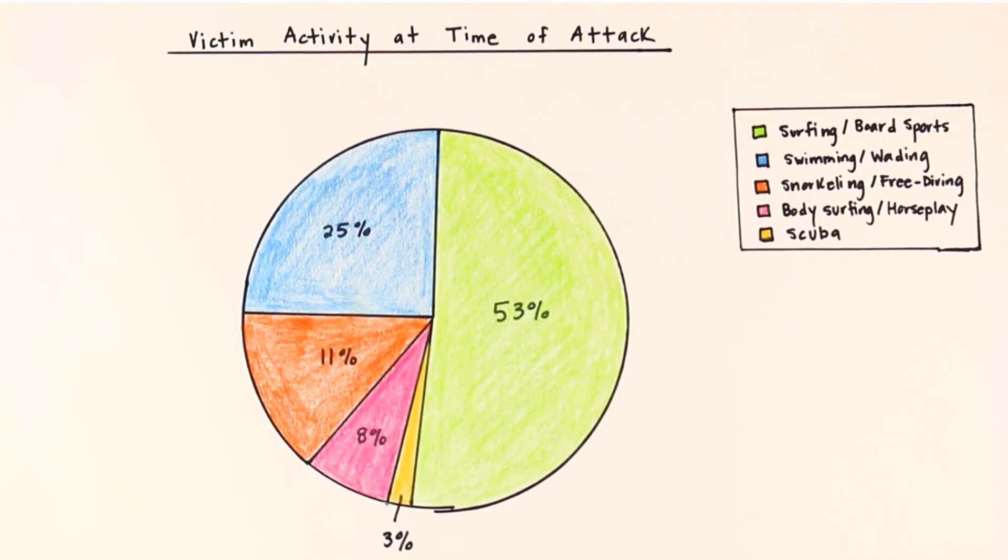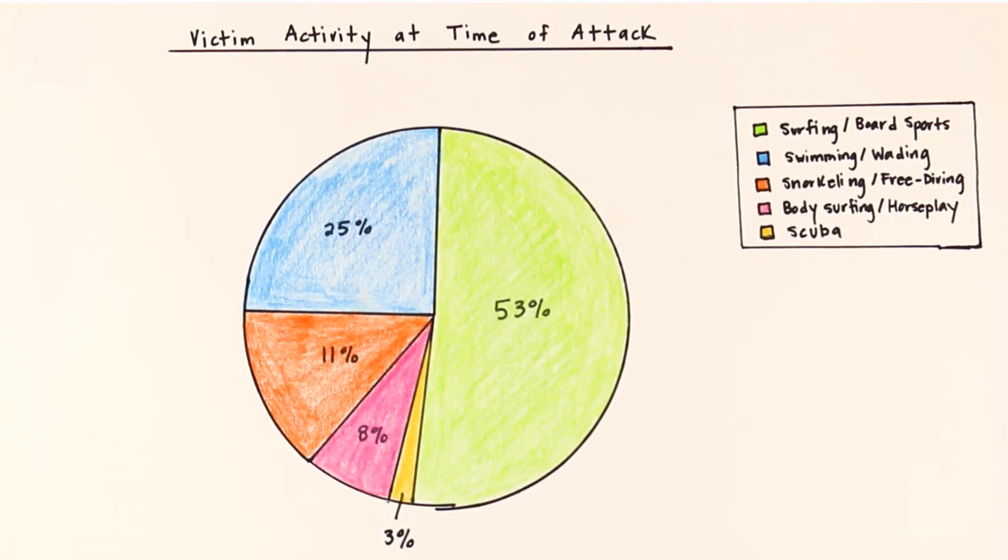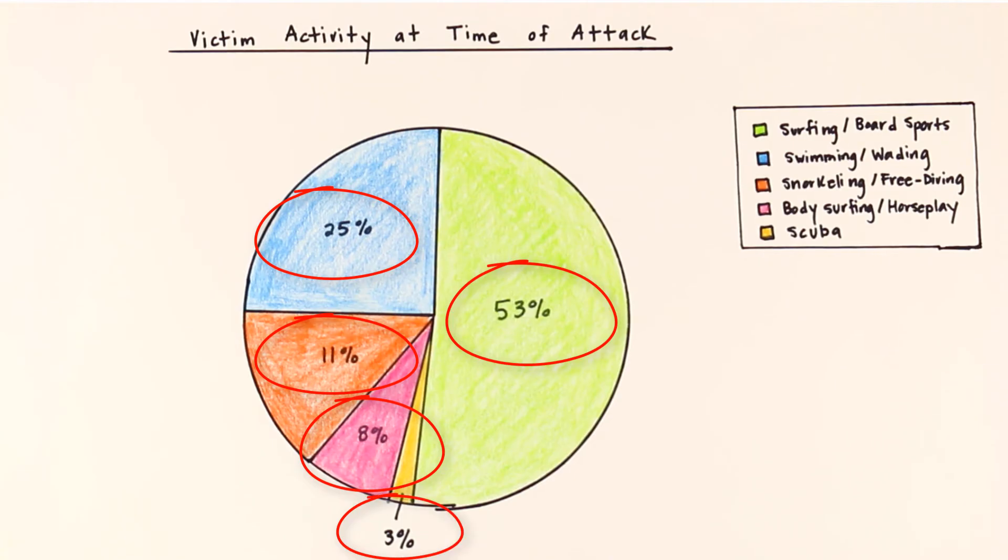The last type of graph we will learn about today is the circle graph, or pie chart. Circle graphs are used to show percentages. The whole pie represents 100%, but each slice represents a smaller percent.